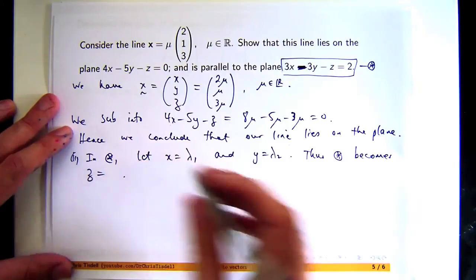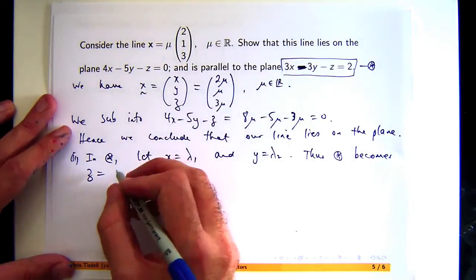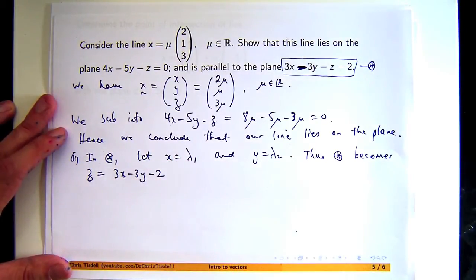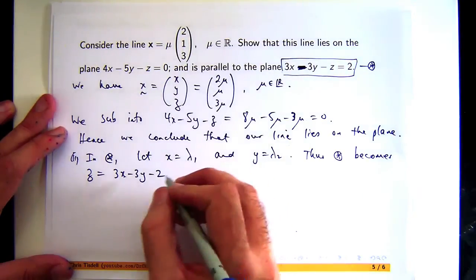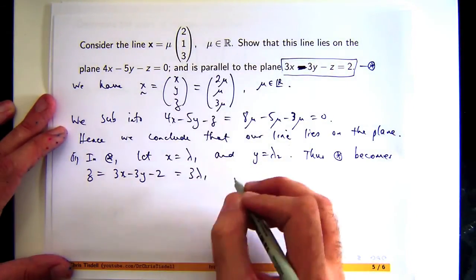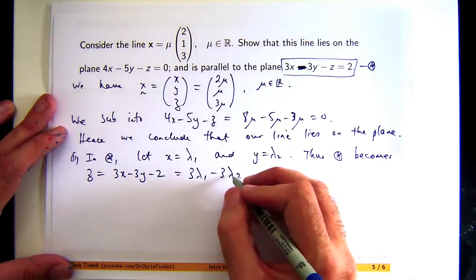So I'm going to isolate z, and we're going to get 3x - 3y - 2. In terms of lambda 1 and lambda 2, that's going to be 3λ₁ - 3λ₂ - 2.